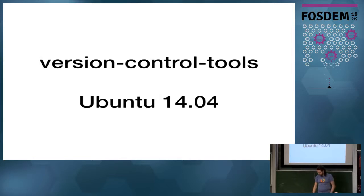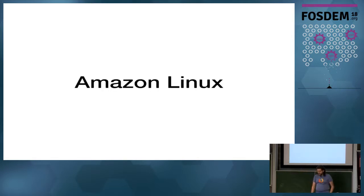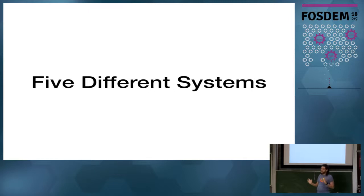But then a thing happened. There's this repository called version control tools. A co-worker of mine created a testing suite to test an application that we were using called Review Board against our Bugzilla. He went and created his own based on Ubuntu 14.04. And then at some point, we also had Amazon Linux. So we had about five different systems, and each of them were installing CPAN packages in a different way, including Debian ones. And that was kind of fun.